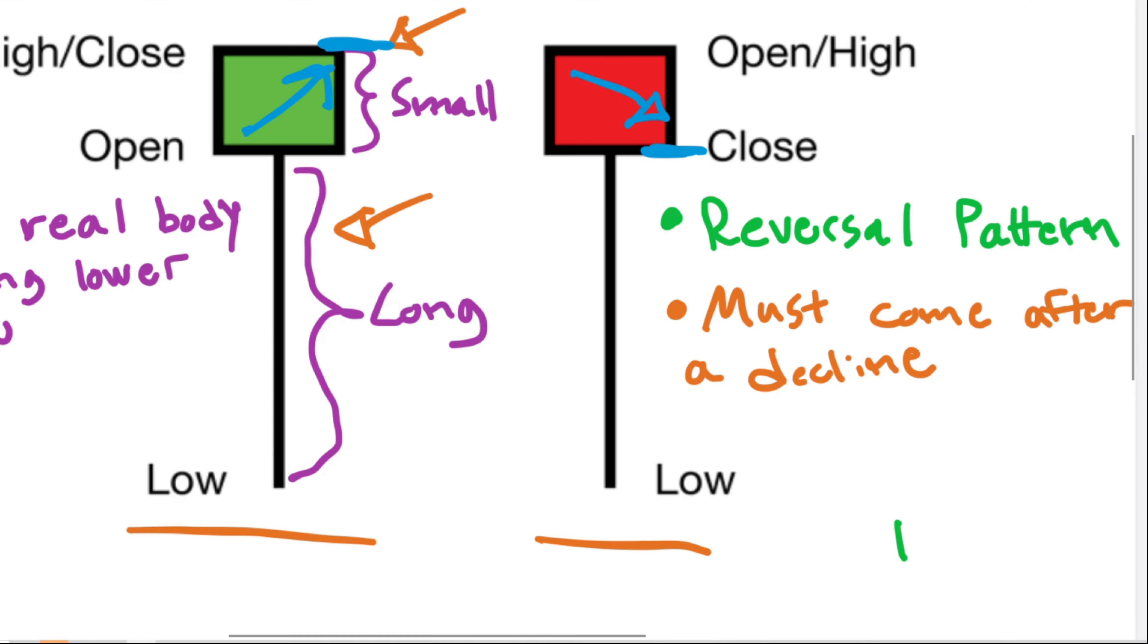So let's say we have a hammer right here. I hope you can see down here in the corner. In order for it to be a valid hammer, prior to the hammer we must have had a price decline and then hopefully the hammer will make the price reverse. If we have price action that goes for example sideways and then we have a hammer, then it's not a good and it's not a valid hammer candle.